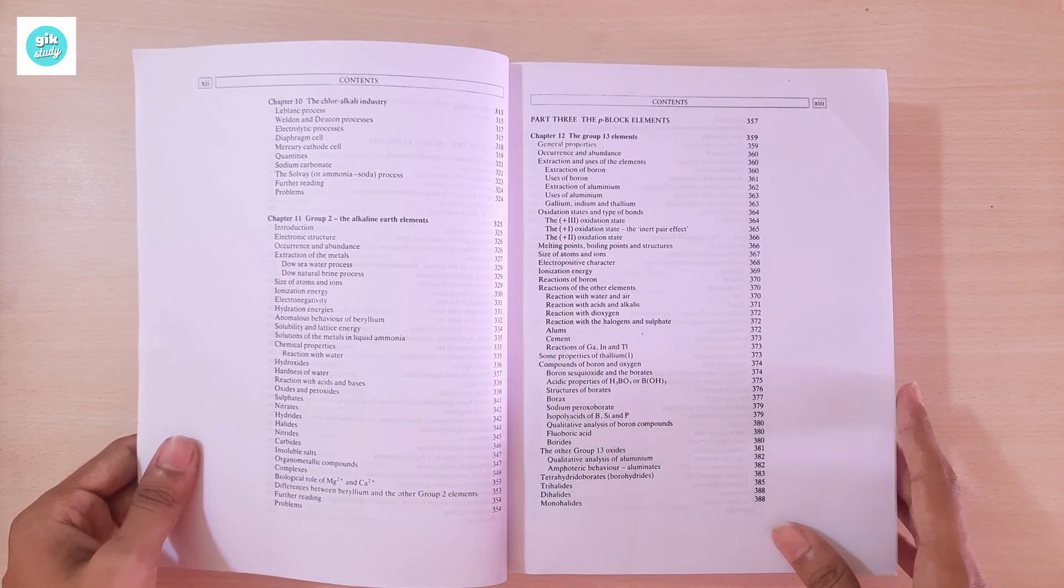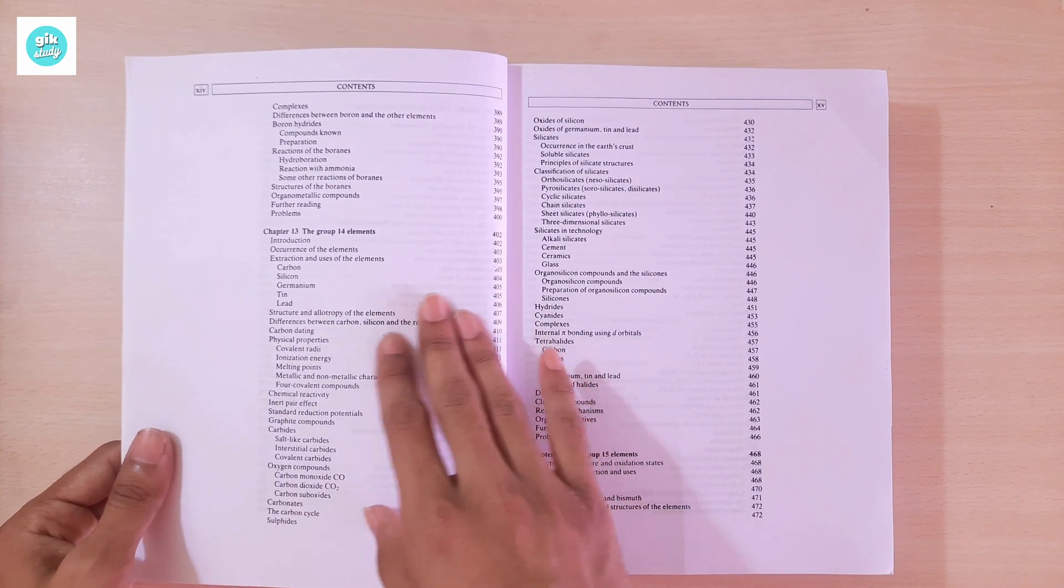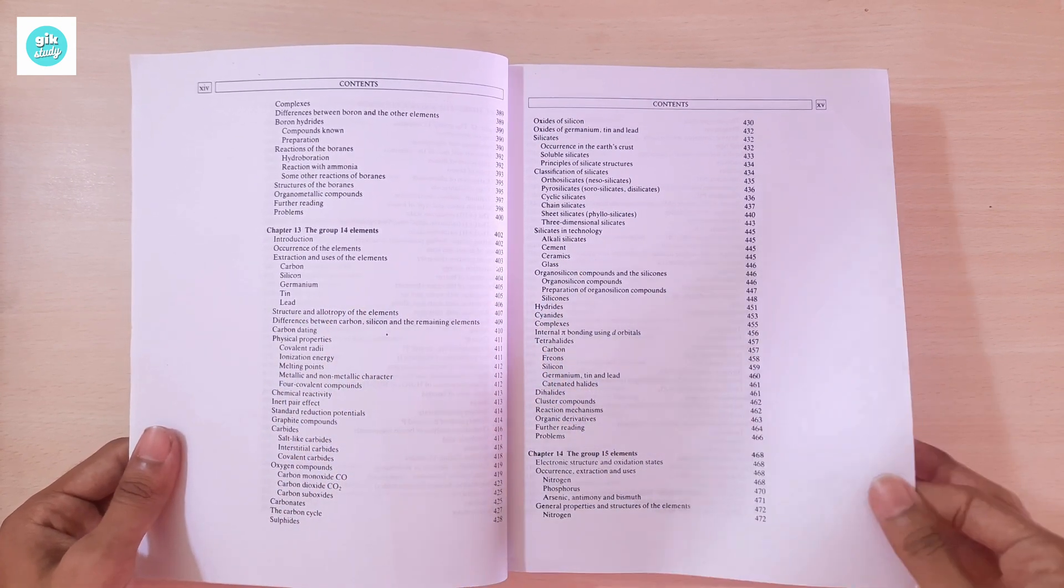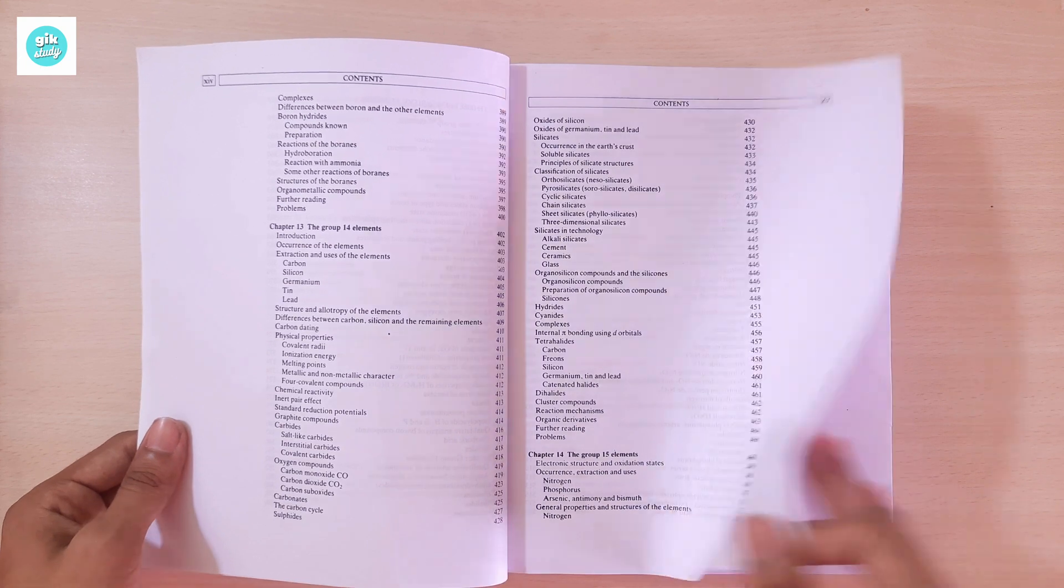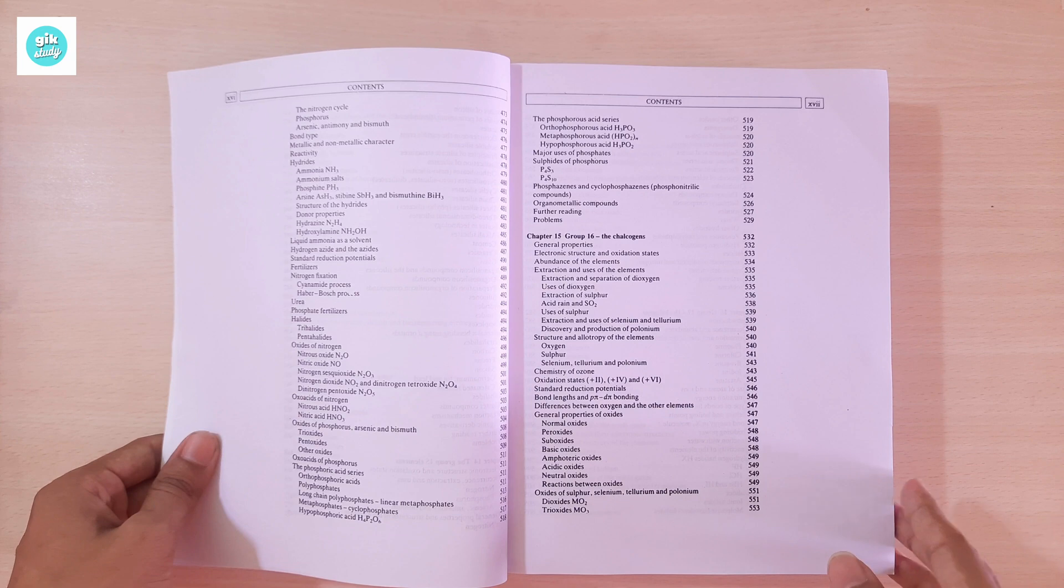Part Three: The P-Block Elements. Chapter 12: Group 13 Elements. Chapter 13: Group 14 Elements. Chapter 14: Group 15 Elements. Chapter 15: Group 16, the Chalcogens.